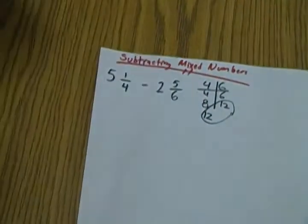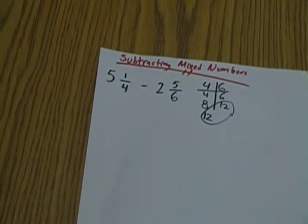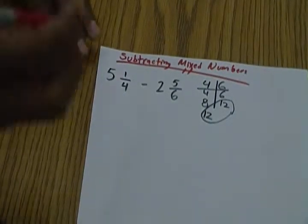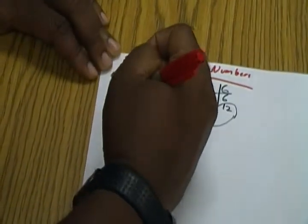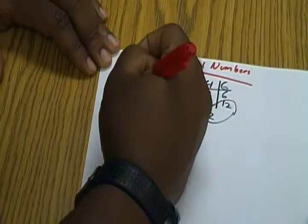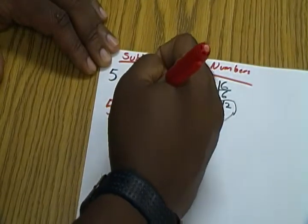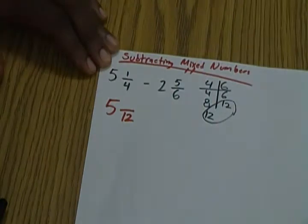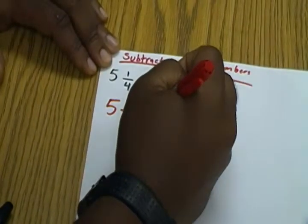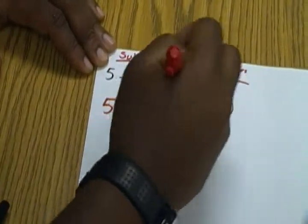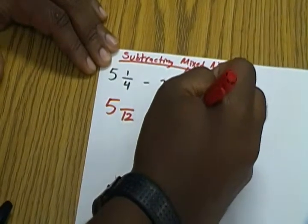So now we're going to use our red to bring down our new denominators. We're going to keep our whole number, in this case 5, and then we're going to put 12 as our denominator. Then we'll come over to the second side. 2 is our whole number, so 2 and something over 12.